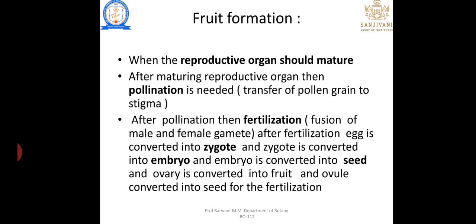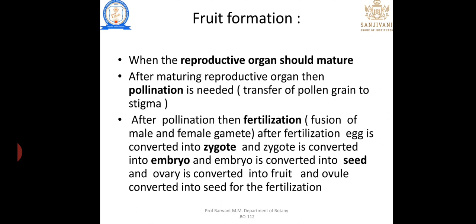How does fruit formation take place? When the reproductive organ matures, pollination is needed — the transfer of pollen grains from the anther to the stigma. After pollination, fertilization takes place, which is the fusion of male and female gametes. After fertilization, the egg is converted into zygote, zygote into embryo, embryo into seed, and the ovary is converted into fruit.